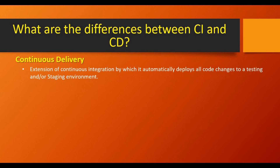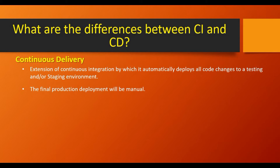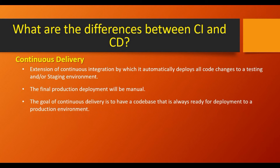Now let's talk about Continuous Delivery. It's an extension of Continuous Integration which automatically deploys all code changes to a testing or staging environment. In Continuous Integration we handle integration but don't deploy to any environment. With Continuous Delivery, we automatically deploy changes to a testing or staging environment — not to production automatically. The final production deployment happens with manual intervention.